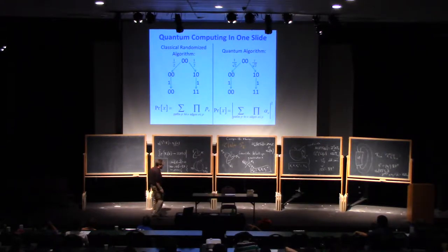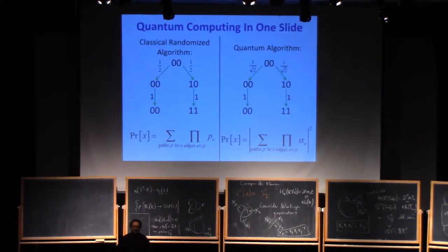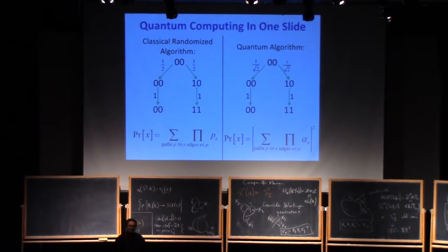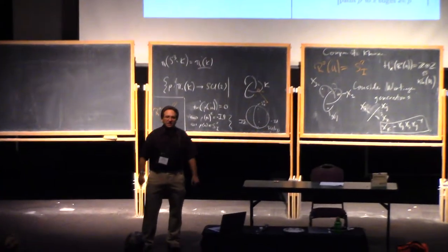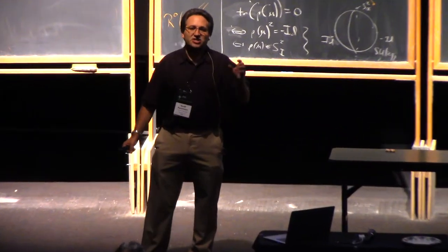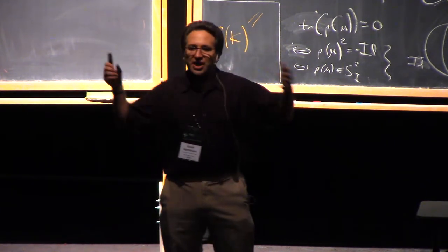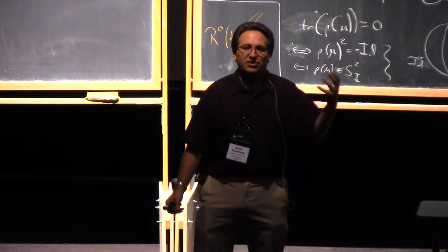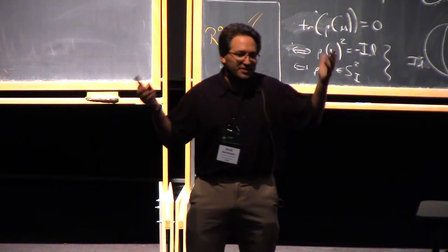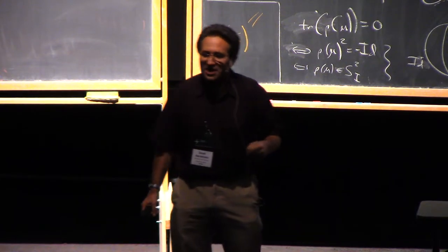So the way that we could think of a randomized algorithm is, our computer has a state at any point in time. The state is a string of n bits, so there's 2 to the n possible states. But because our algorithm is randomized, the state can assign some probability mass to each one of these 2 to the n states. So really, the more general state we should think of is a vector of 2 to the n probabilities, representing the probability of every possible configuration of the bits at each point in time.